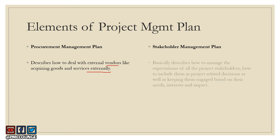The next document is the stakeholder management plan. This document describes how to manage the expectations of all project stakeholders. While the requirements management plan gathered requirements from stakeholders, this plan ensures their expectations are managed going forward. It also describes how to include stakeholders in project-related decisions and keep them engaged based on their needs, interests, and impact — for example, a CEO may prefer a biweekly status update rather than daily stand-up meetings.